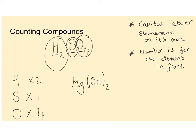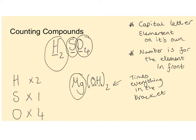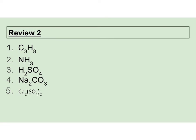Next thing to think about is brackets. If it's a bracket, times everything in the bracket. For example with Mg(OH)2 - Mg is one element, then oxygen times by two and hydrogen times by two within the bracket.